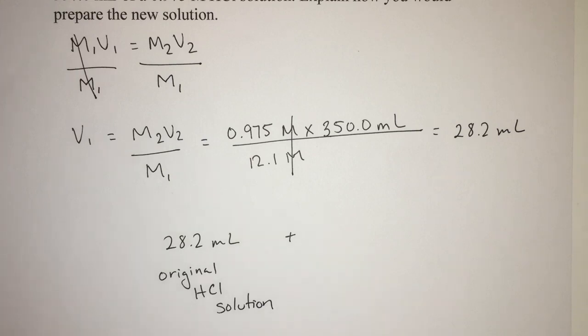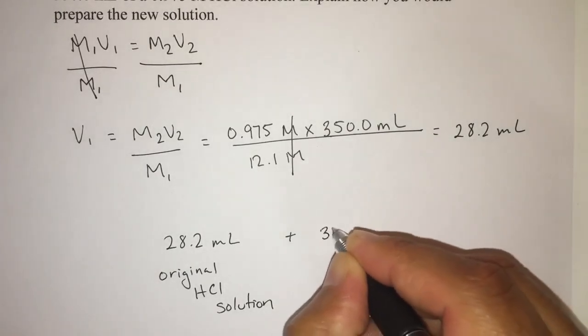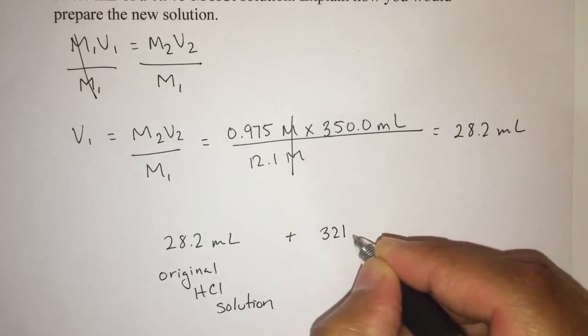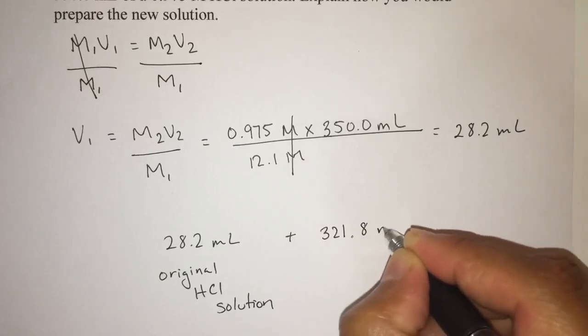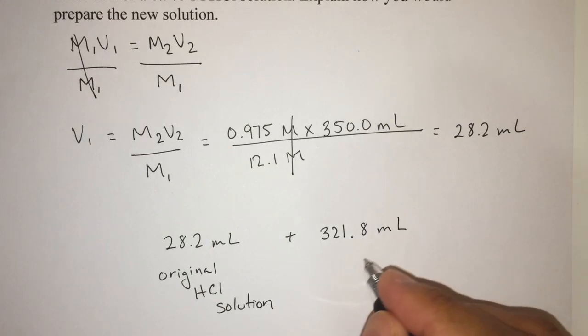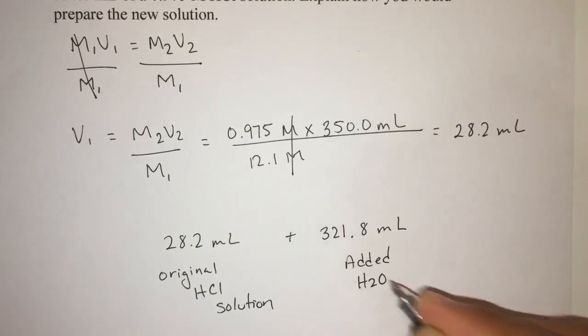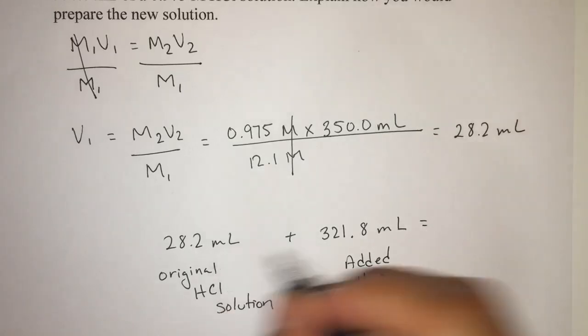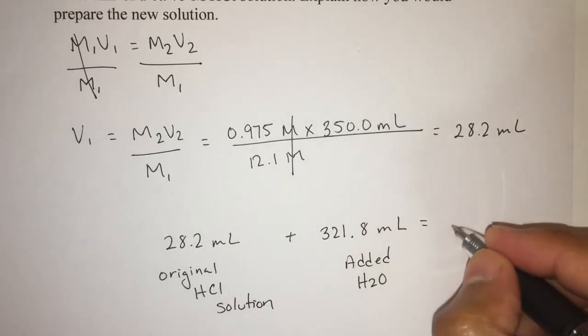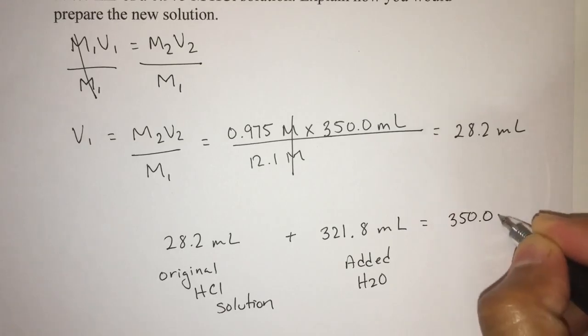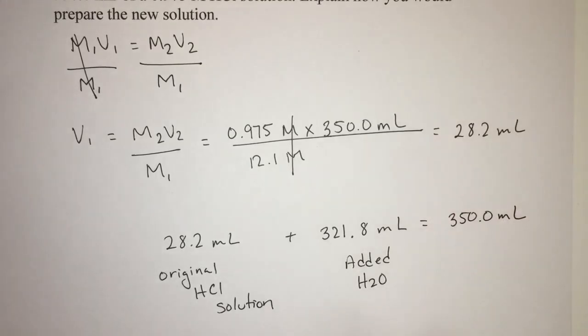And so that's a common mistake students will make. 350 ml is the final volume. So how much water do we add? 321.8 milliliters of added water. And of course, that will give us our final volume of 350.0 milliliters.